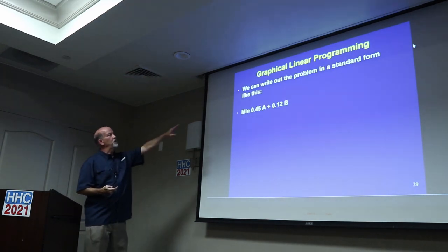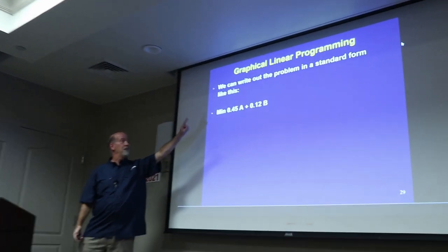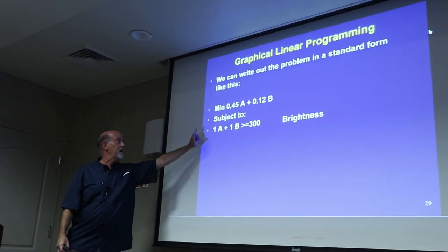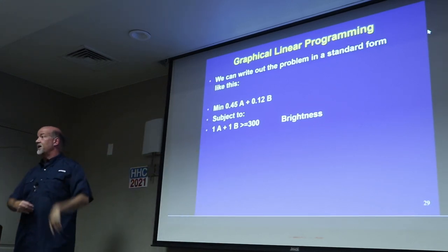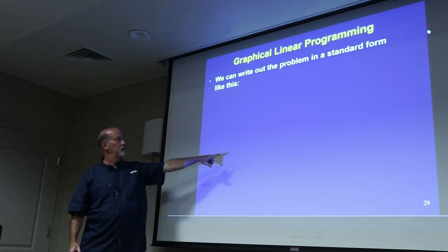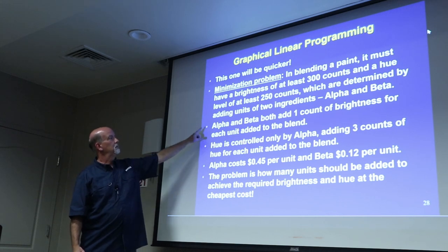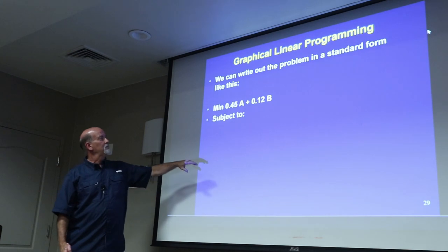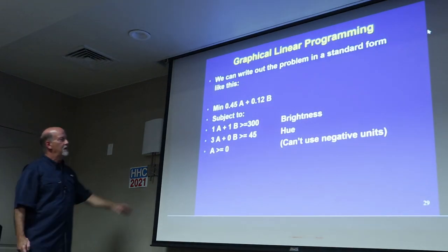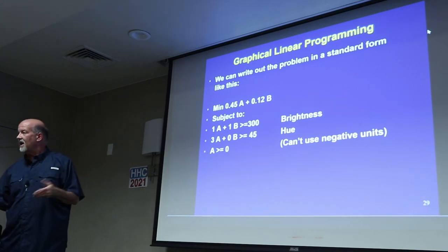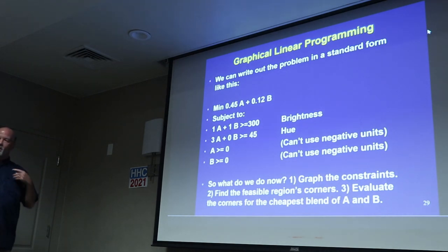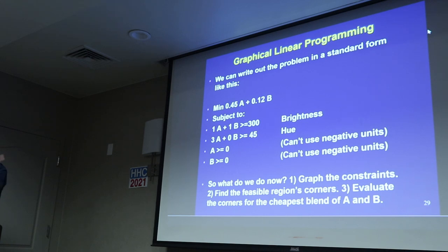So the problem is how many units you put into the mix in order to get the required brightness and the required hue as cheaply as possible. So you can write it out like this. Minimize 45 cents for every alpha plus 12 cents for every beta subject to: A plus B has to be at least 300. That's brightness. Hue has to be at least 250, which is 3A. A has to be greater than zero and B has to be greater than zero. So what do you do now? You graph the lines. You don't worry about the inequalities. You graph where it's equal to the thing and then figure out which side of the line we're talking about.